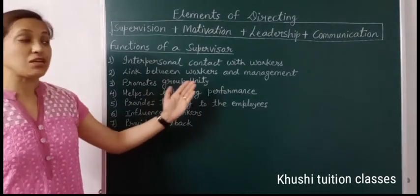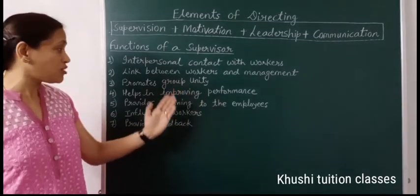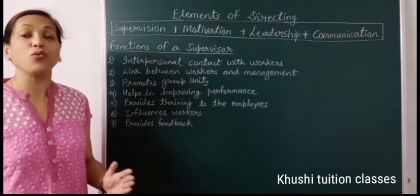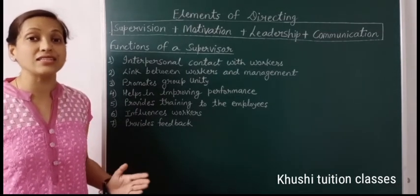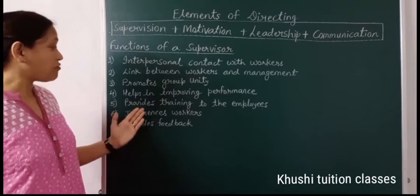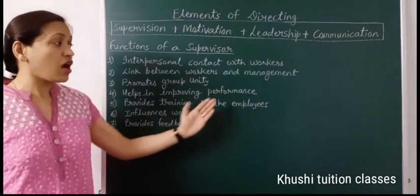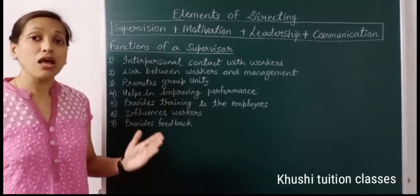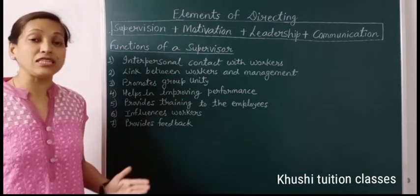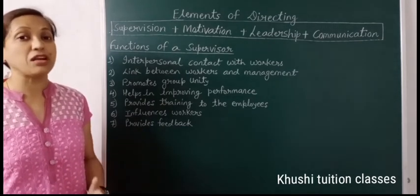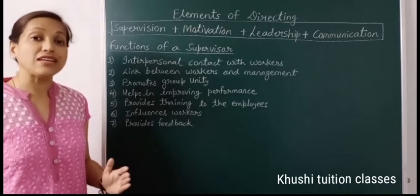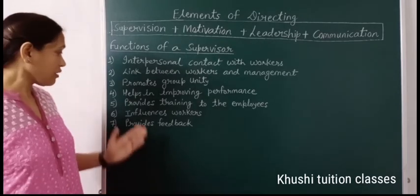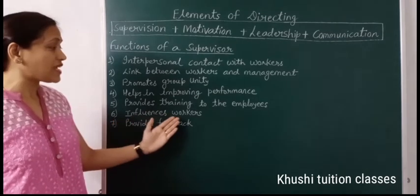The fourth is helps in improving performance. यह manager अपनी team के performance को improve करने के लिए regularly work करता है, उन्हें motivate करता है, guide करता है. The fifth is provides training to the employees. एक knowledgeable और skillful supervisor अपनी team को on the job training provide करता है, उनके लिए training session organize करता है.